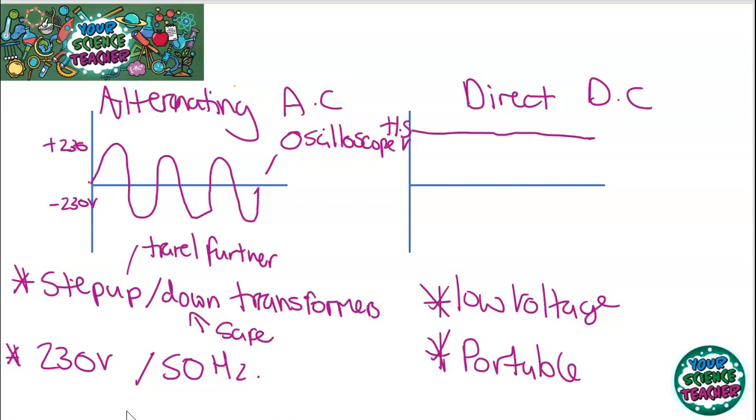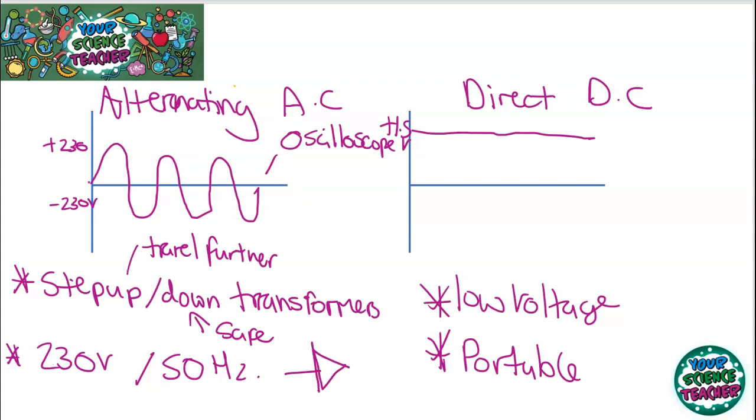Now you can make alternating current into direct current, but you need to be able to use a diode into your circuit, and that will mean that it can only flow in one direction. Because we use large voltages when we work with mains electricity, we need a plug that can be fit to the task. And it works by three main wires. We've got the brown wire over here, which is known as our live wire. We have our yellow and green wire, which is known as the earth wire. And we have our blue wire, which is known as the neutral wire.